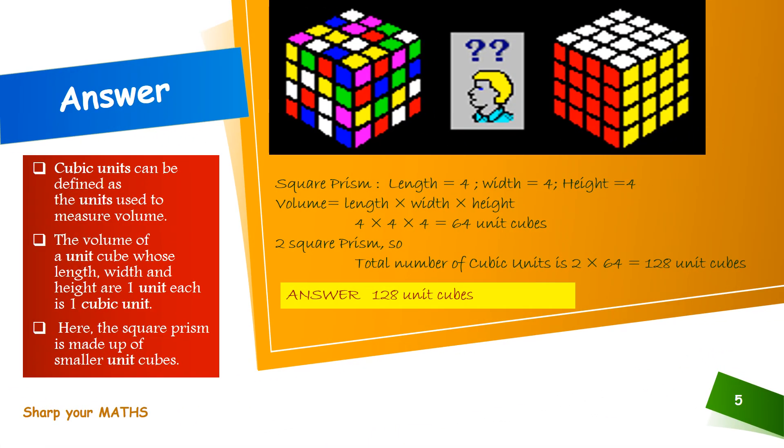It's a square prism of length 4, width 4 and height 4. So in one square prism, there are 64 unit cubes. Totally 128 unit cubes.